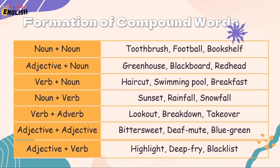Next is the formation of compound words. We can form compound words by joining noun plus noun, such as toothbrush, football, and bookshelf. They can also be formed by joining adjective plus noun, such as greenhouse, blackboard, or red hat.